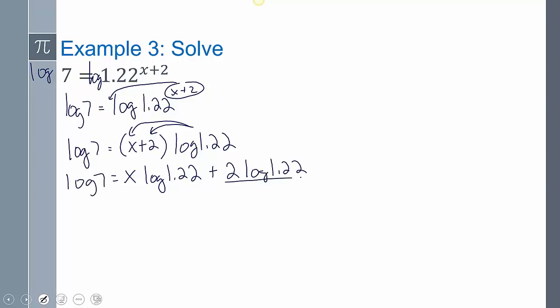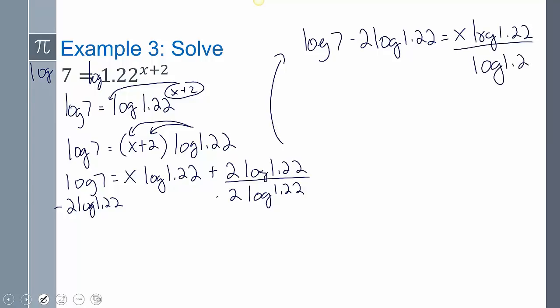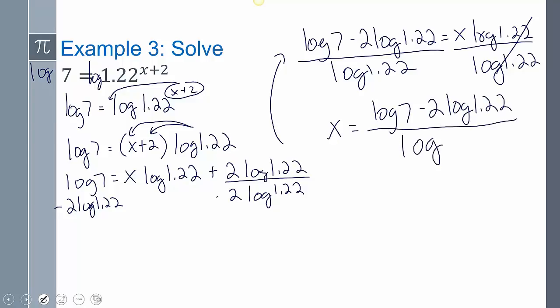Now we have to envision this as a number. It's a number, but it's just in its exact form as log 1.22. So I want to move that to the other side, minus 2 log 1.22. I'm going to rewrite it: log 7 minus 2 log 1.22 equals x log 1.22. And now I can divide both sides by log 1.22. So that cancels out, and I get x equals (log 7 minus 2 log 1.22) all over log 1.22.